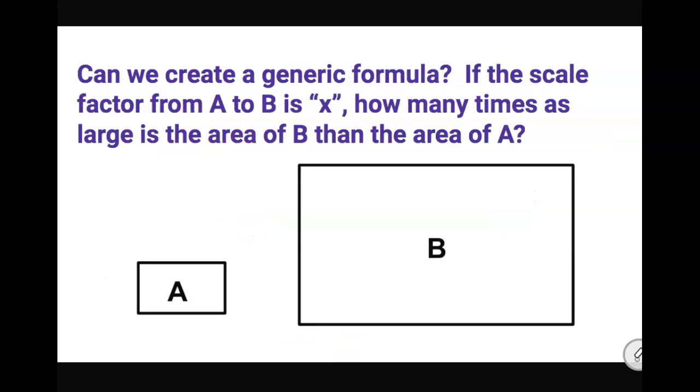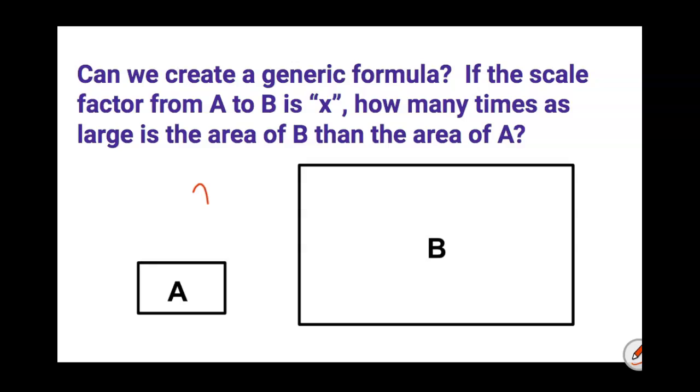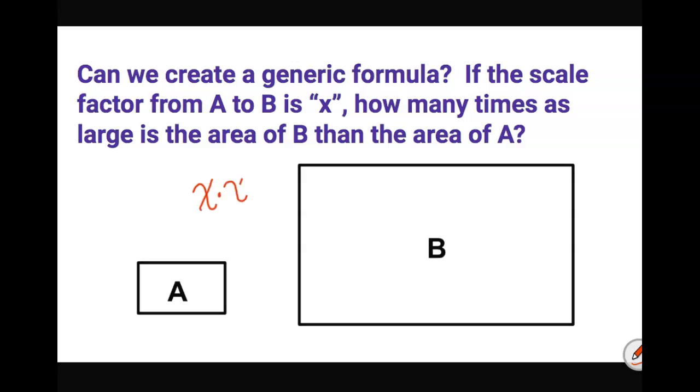So can we create a general formula, something that's just generic? If the scale factor from A to B is X, how many times as large is the area of B than the area of A? So what we noticed is that the scale factor always kept getting multiplied by itself. So it should be X times X to get that the area of B will be X squared times as large compared to the area of A.